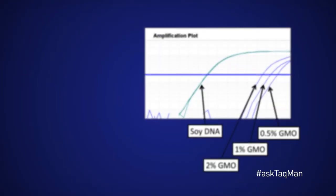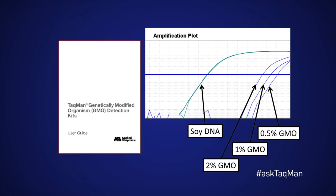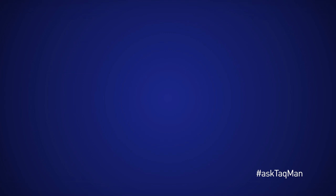Speaking of food, some labs use qPCR to calculate percent GMO in food samples, in order to ensure that they meet legal standards.